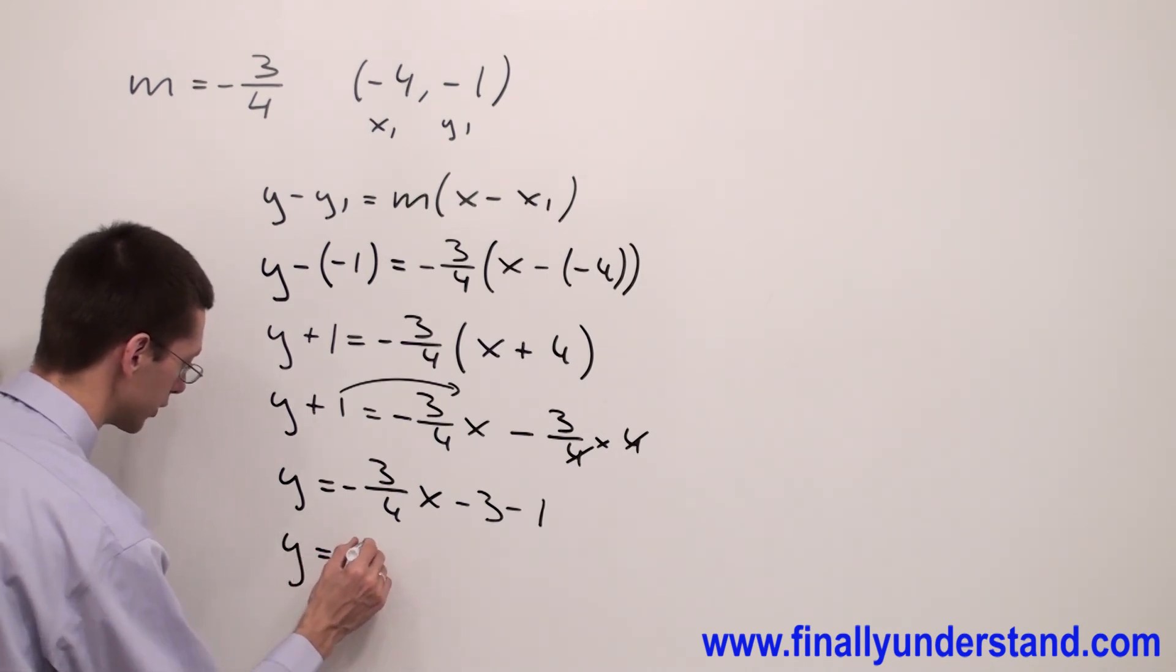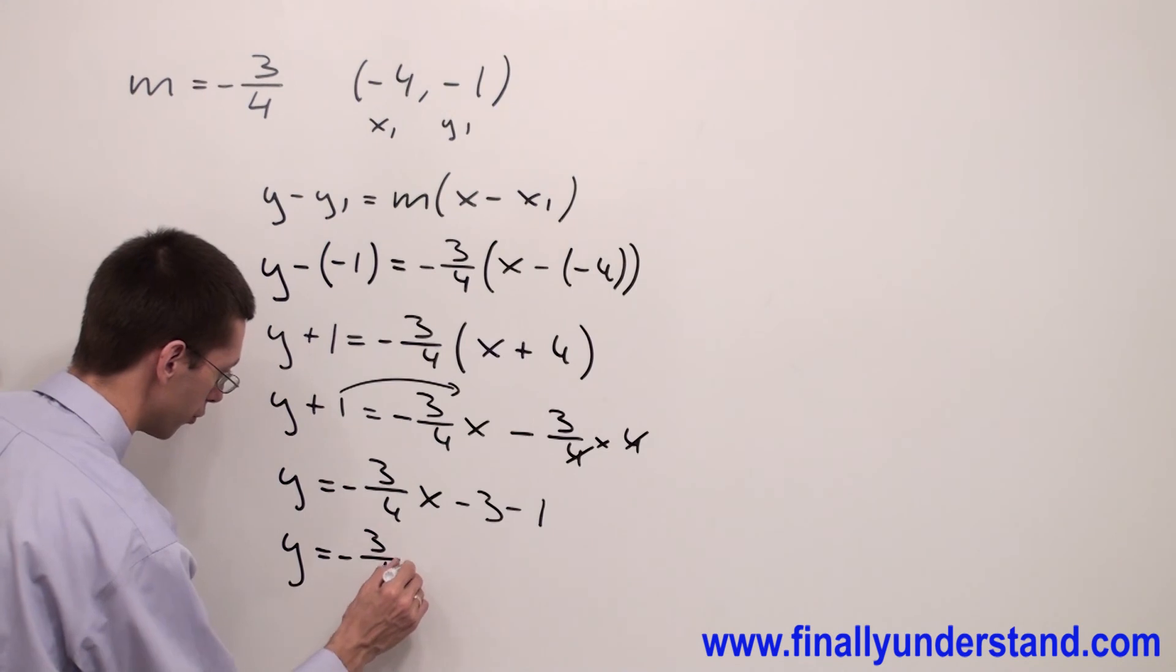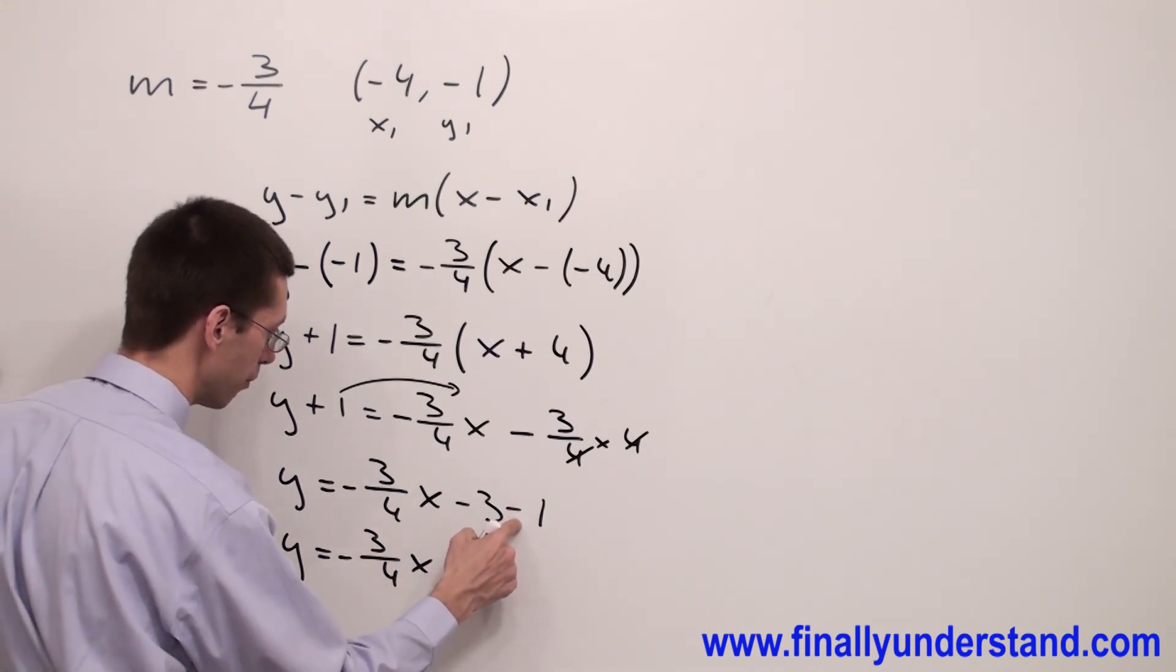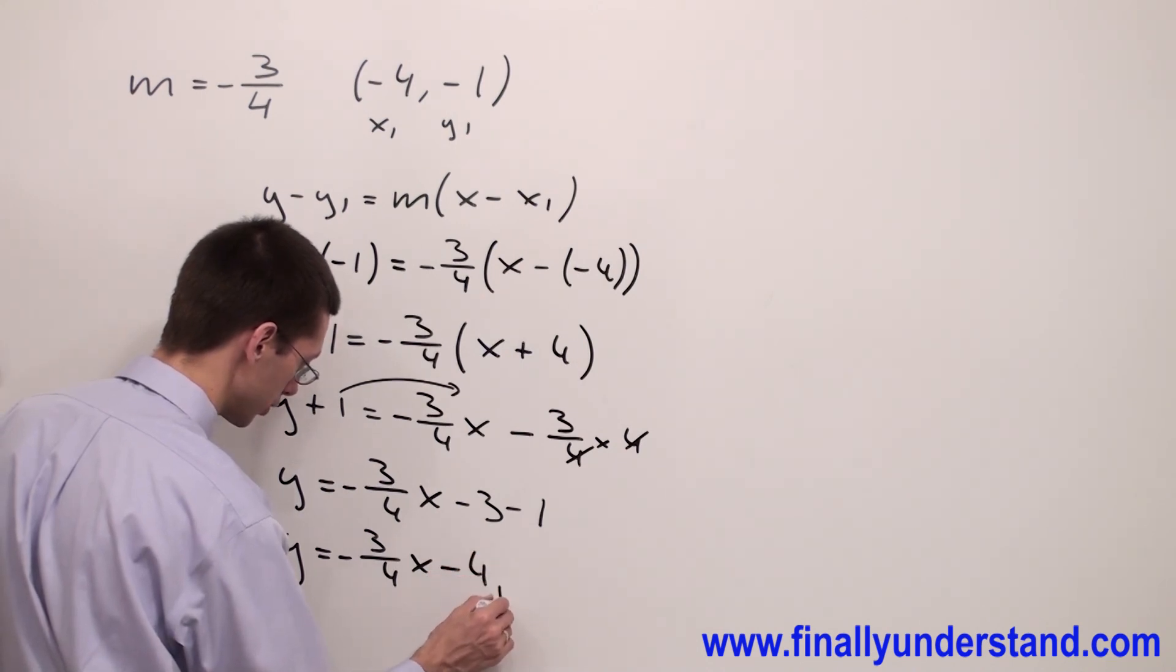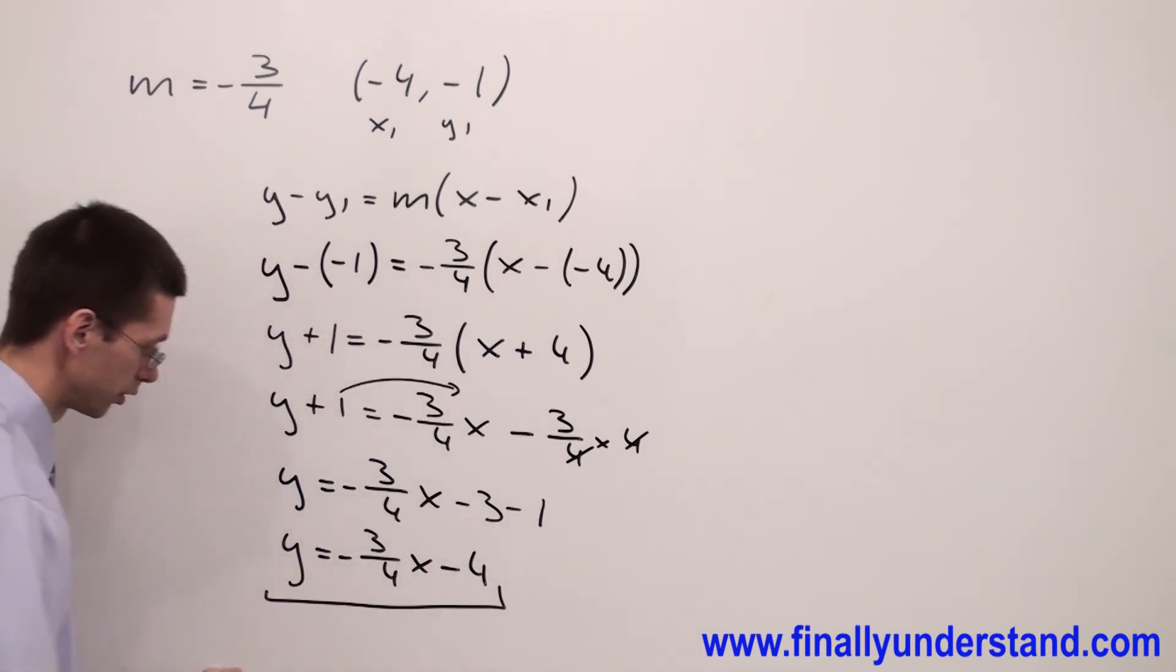And my equation is y equals negative 3 over 4x. Negative 3 minus 1 is equal to negative 4. This is the solution to my problem.